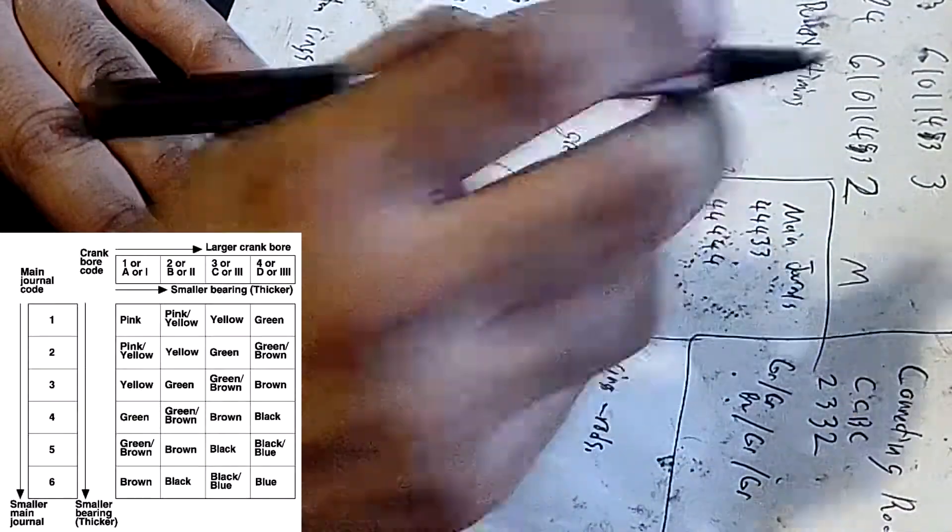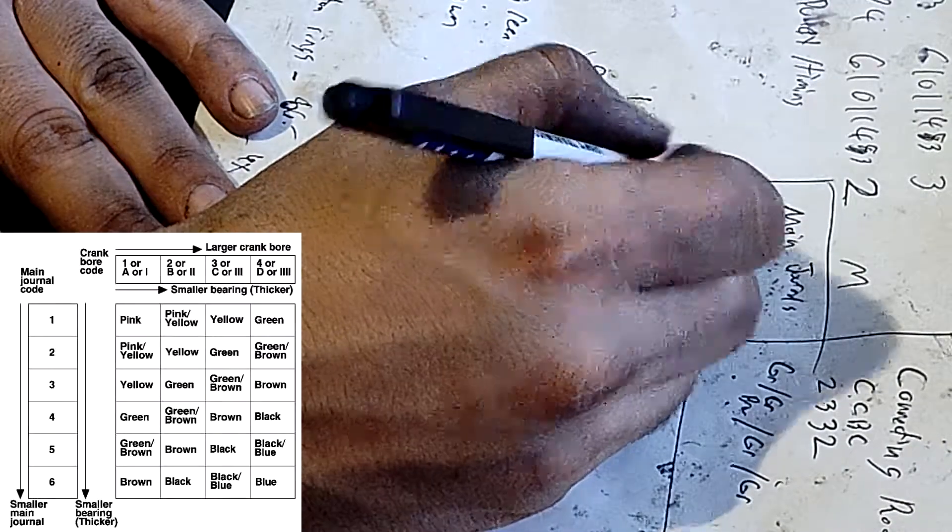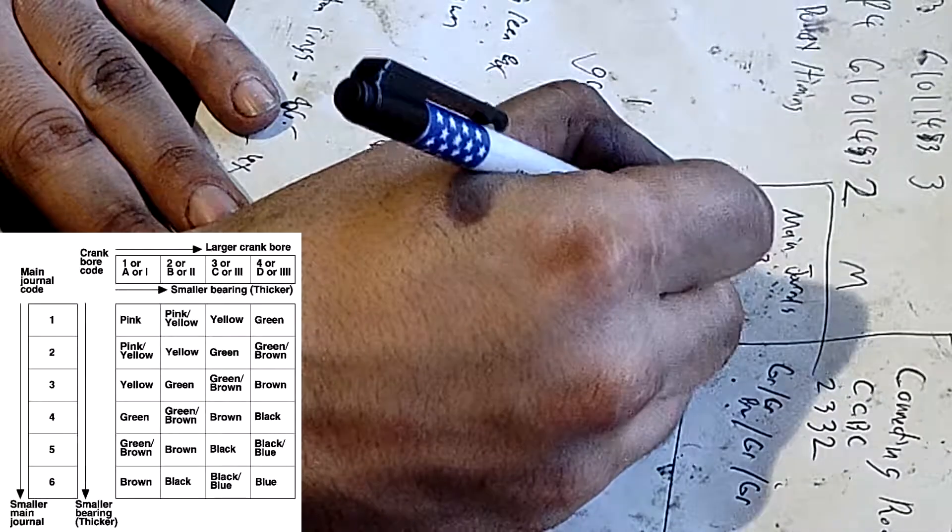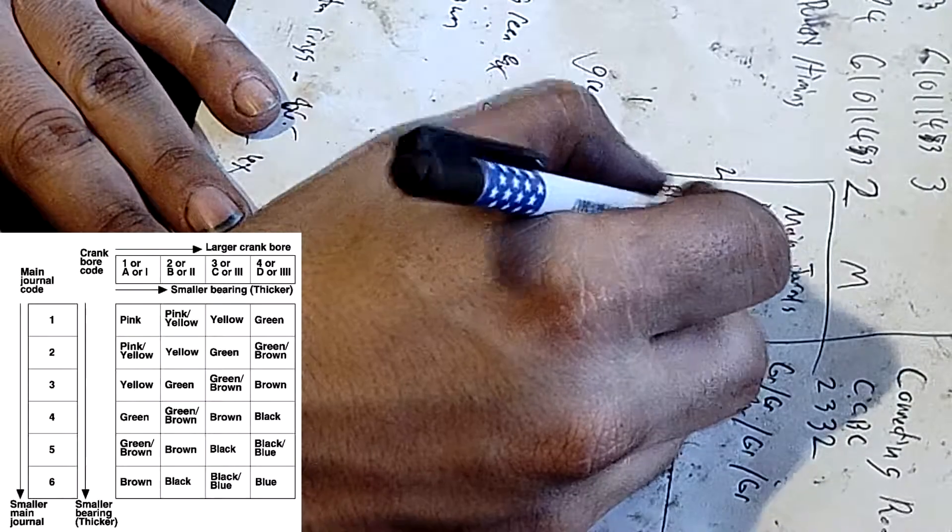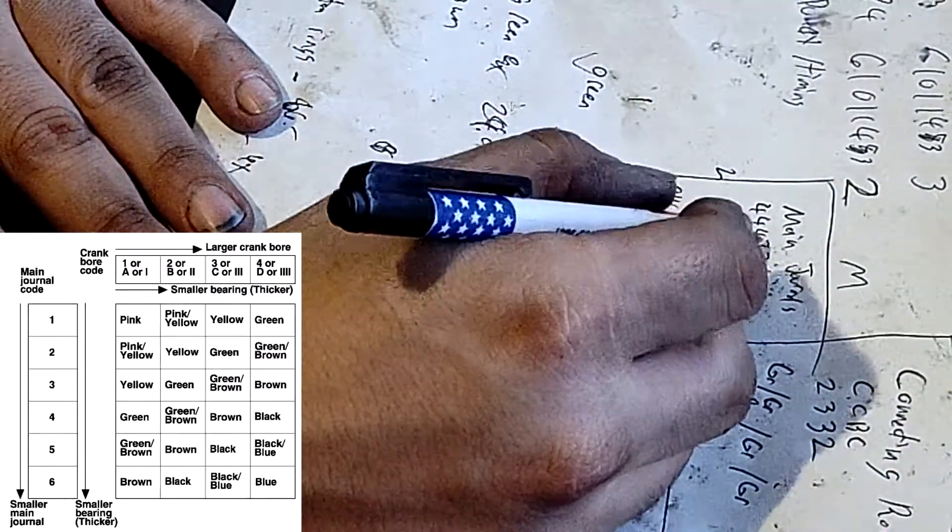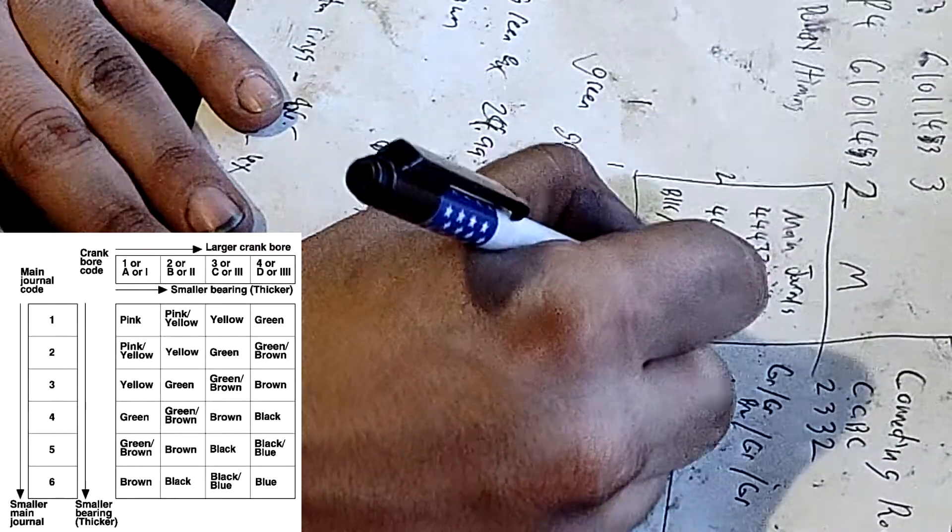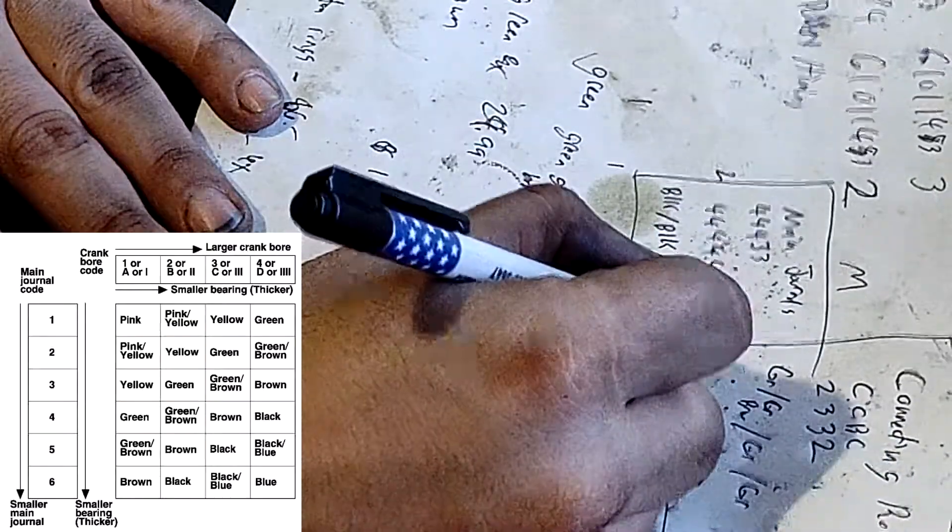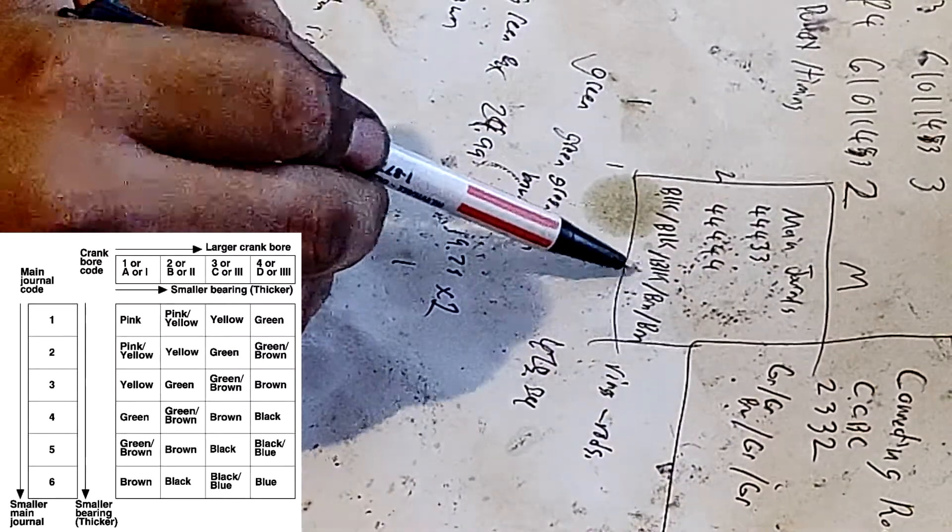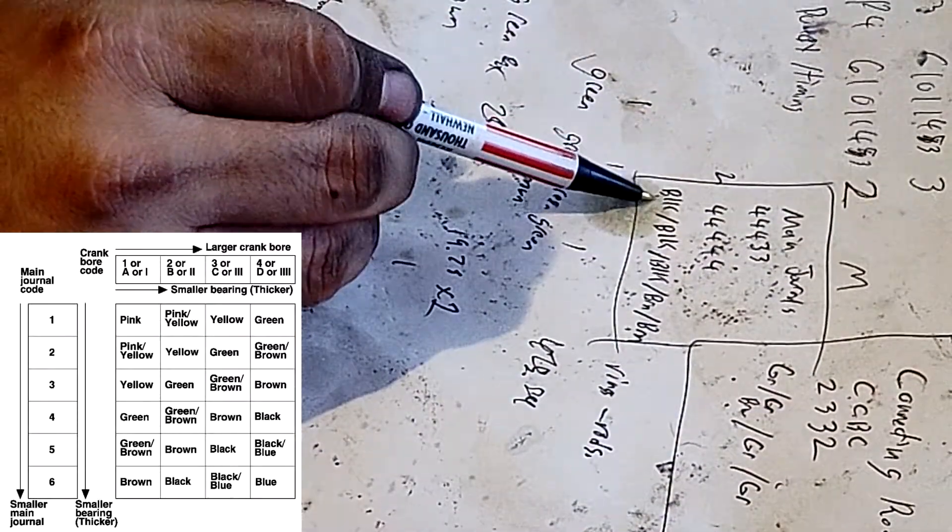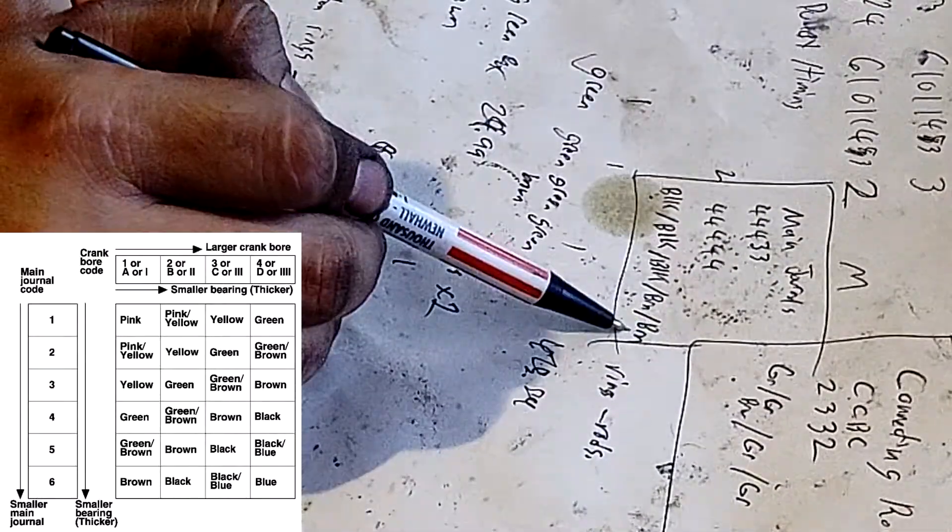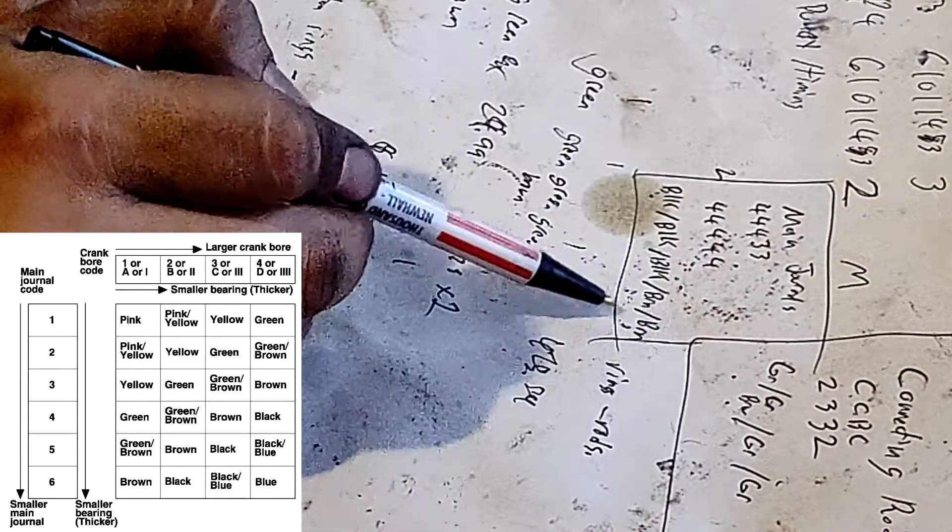So we'll take 4 to 4 which is black. And then our next journal is 4 to 4 so another black. And 4 to 4 black. 4 3 to 4 which is brown. And 3 to 4 brown. So my main journal bearings will be black black black brown brown - flywheel, second journal, third journal, fourth journal, and this will be the last journal which goes to our timing chain and our belt driven accessories.